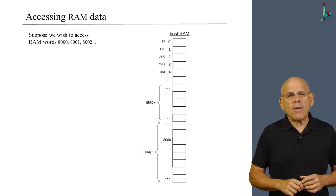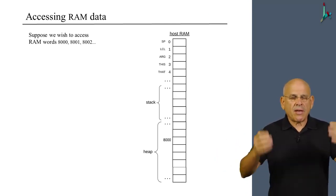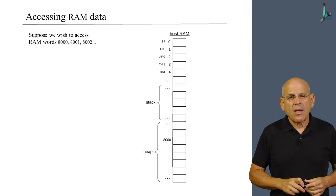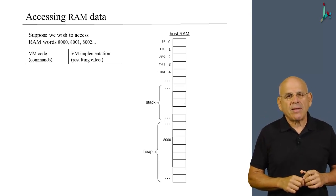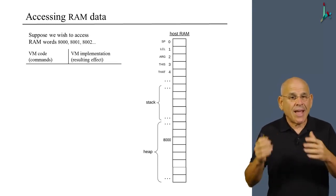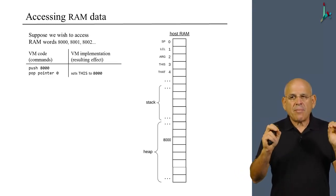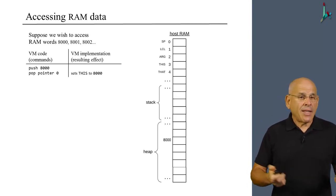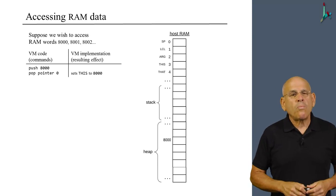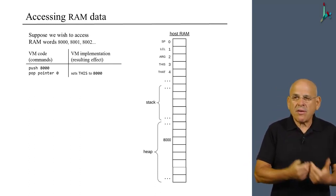Suppose we wish to access RAM words 8000, 8001, 8002, and so on, because they stand for a particular object or array, or because they store the data of a particular object or an array. How do we do it? I'd like to show you the sequence of commands that are needed to implement it. For each command, I will discuss the command as well as what the VM implementation does with this command. First of all, we have to anchor this segment on the desired address. The desired address is 8000. So we push 8000 onto the stack, and then we pop it off the stack and into pointer 0. In response to these two commands, the VM implementation will set the this pointer to 8000.